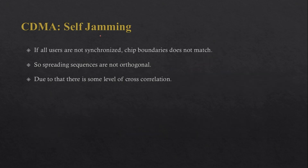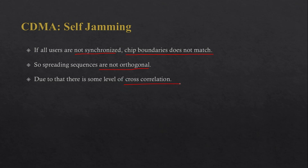Another problem in CDMA is self-jamming. There are a couple of reasons for it. The first is that if all users are not synchronized, the chip boundaries do not match and so the spreading sequences are not orthogonal. This is the main reason self-jamming can occur, because it introduces some level of cross-correlation. Due to this cross-correlation, each user blocks another, and that is how jamming occurs. This concludes the basic introduction to CDMA.